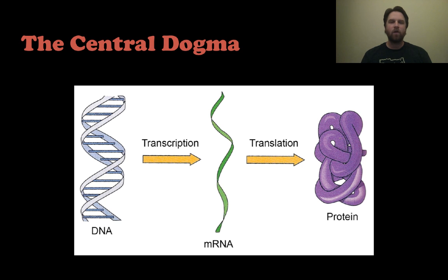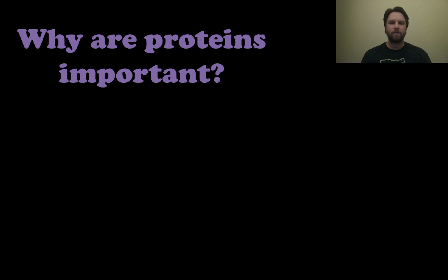The central dogma to all of biology is this picture right here. DNA is transcribed into mRNA, or messenger RNA, which is then translated into proteins. Proteins control a number of the things that we do in our bodies, including enzymes and hormones. This is an extremely important concept.